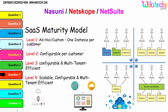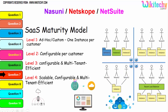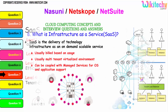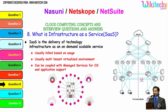You are able to see level one here — one instance per customer — and level two, which is configurable per customer. You can see the different colors representing different instances. Level three is configurable with multi-tenant, and here you have a load balancer. This scalable, multi-tenant environment is your cloud computing network.